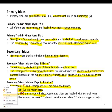Augmented triads are labeled with a plus sign (+) and a capital Roman numeral. Why? Because of the major third interval from the root — a major third suggests a major sound. So if we have a major third, it gives us a major sound even though the fifth might be altered.